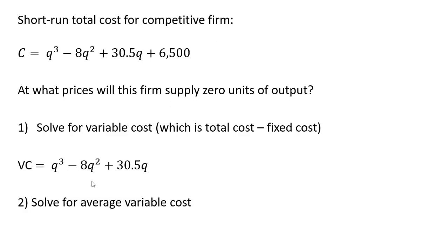Once we have variable cost, we are going to solve for average variable cost, which is variable cost divided by Q. So for each one of these components here, I'm going to divide by Q. So Q raised to the third power divided by Q is Q squared, minus 8Q squared divided by Q is minus 8Q, and so on. So that is our average variable cost equation.